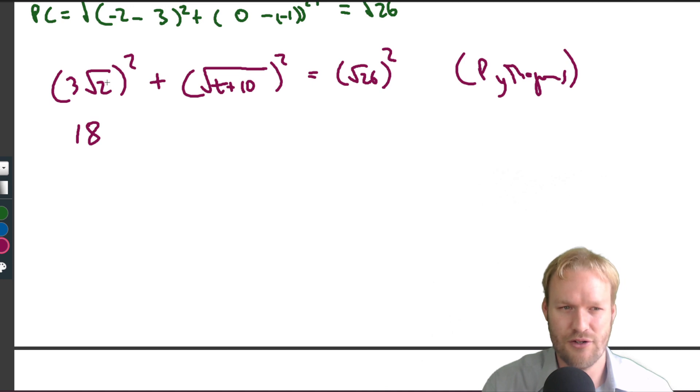Remember, this was √18. Plus, those square roots are going to work out quite nicely, equals 26. So 18 plus t is 28, so t is -2.